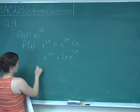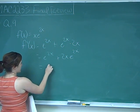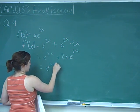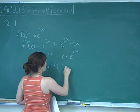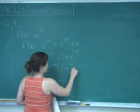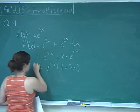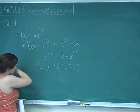I'm going to factor out e to the 2x, and that leaves me with 1 plus 2x, and I'm going to set this equal to 0.